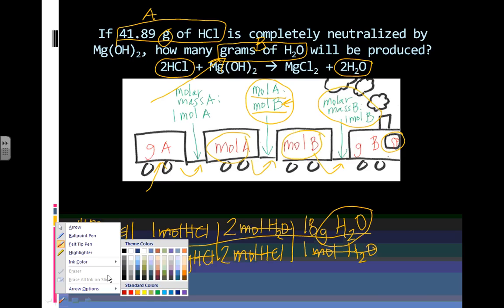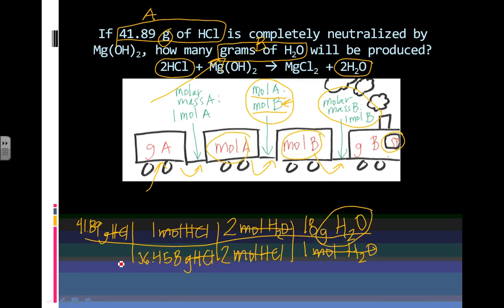And then again, as we do this in the calculator, we are going to do 41.89 times 1 divided by 36.458 times 2 divided by 2 times 18 divided by 1. And my answer is going to be 20.68 grams of water. And that is my answer. So now you are going to have some practice problems to work with. Thank you for listening and I hope you learned a lot of chemistry.